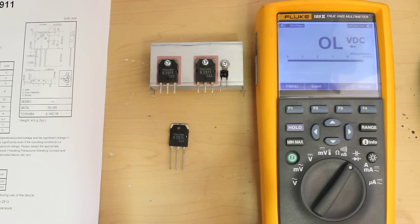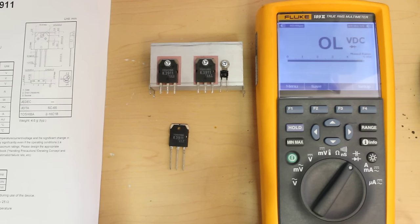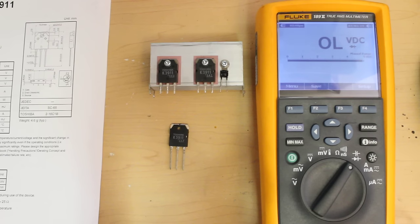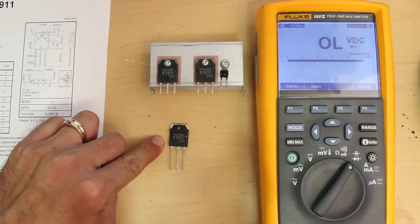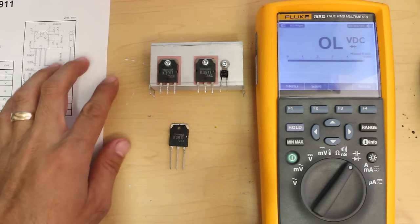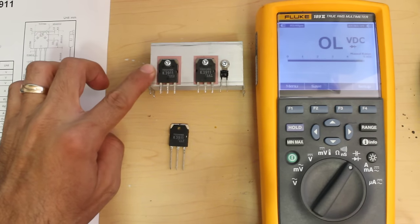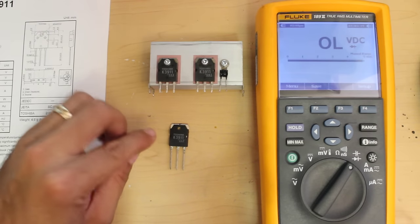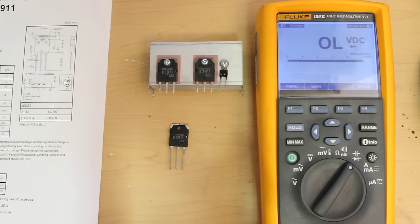In this case, I have a Toshiba K3911 which I extracted from the power supply of a 42-inch Samsung plasma TV, and I have a new replacement here. I'm going to show you how the burnt or shorted MOSFET tests and how the new one tests as well.